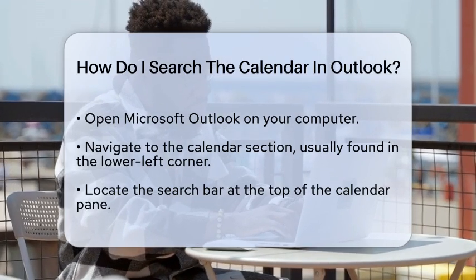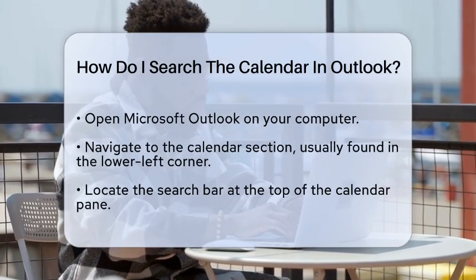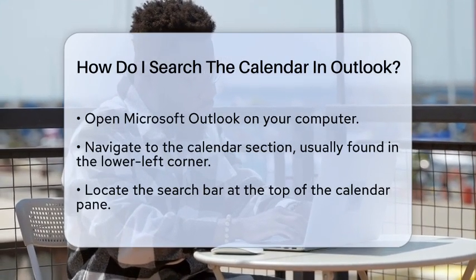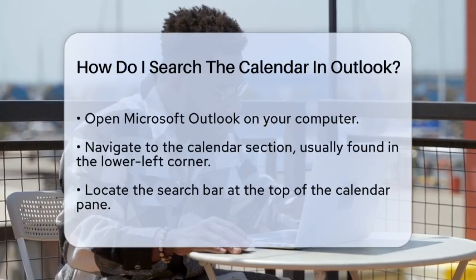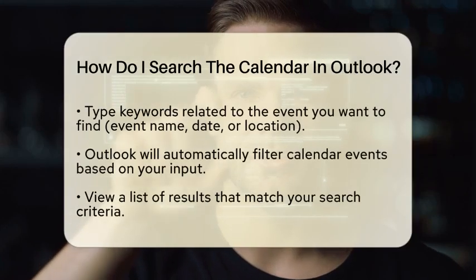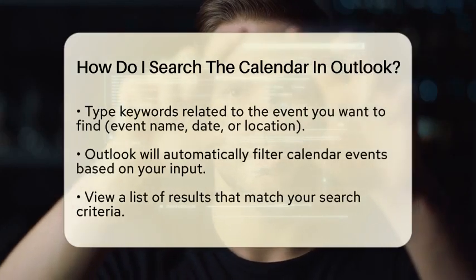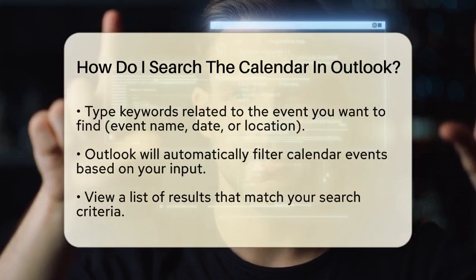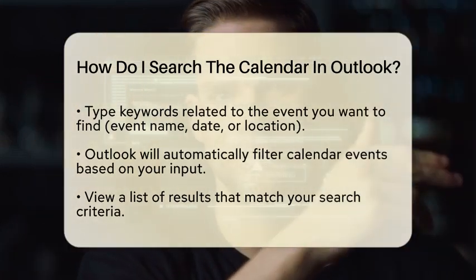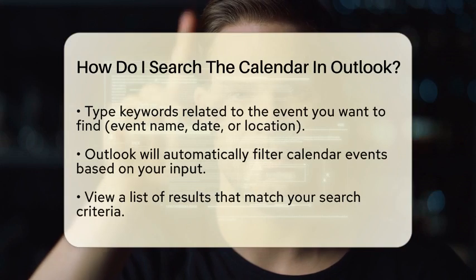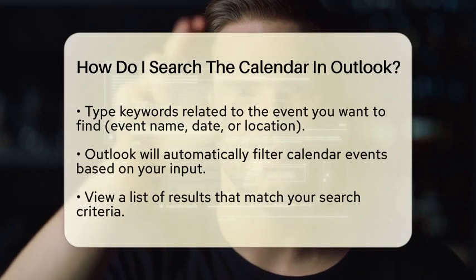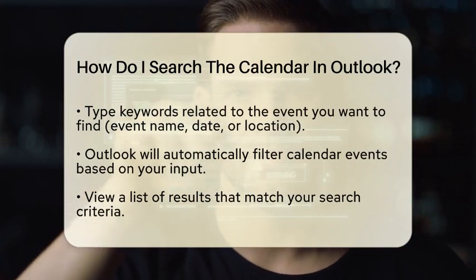To begin, open Microsoft Outlook on your computer. Once you are in the application, navigate to the calendar section. You can usually find this in the lower left corner of the window. After you are in the calendar view, look for the search bar, which is typically located at the top of the calendar pane.